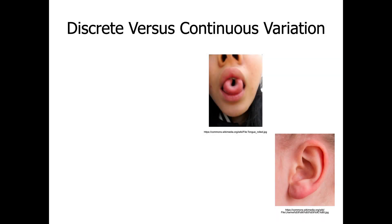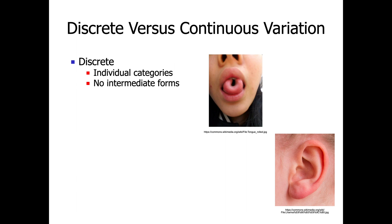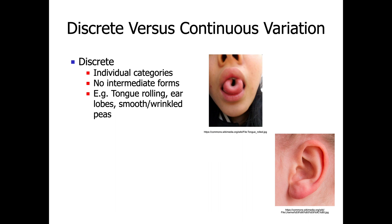The two different types we're going to look at are discrete versus continuous variation. With discrete variation, this is variation that falls into very individual categories, and there are no intermediate or middle forms of it. Examples of that might be tongue rolling — you can either roll your tongue, like the image on the right, or you cannot. There's also earlobes: you can have a free earlobe or an attached earlobe. And then in peas, which is what Mendel originally found his genetic ratios with, you can have smooth or wrinkled peas.